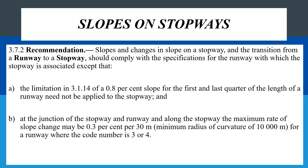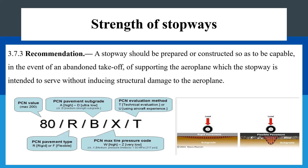Slopes on stopways: slopes and changes in slope on a stopway, and the transition from a runway to a stopway, should comply with the specifications of the runway with which the stopway is associated. That is, the same slope change requirements that apply to the runway apply to the stopway, except that the 0.8% slope requirement for the first quarter and last quarter of the runway length is not applicable to stopways. At the junction of the stopway and runway, and along the stopway, the maximum rate of slope change may be 0.3% per every 30 metres.